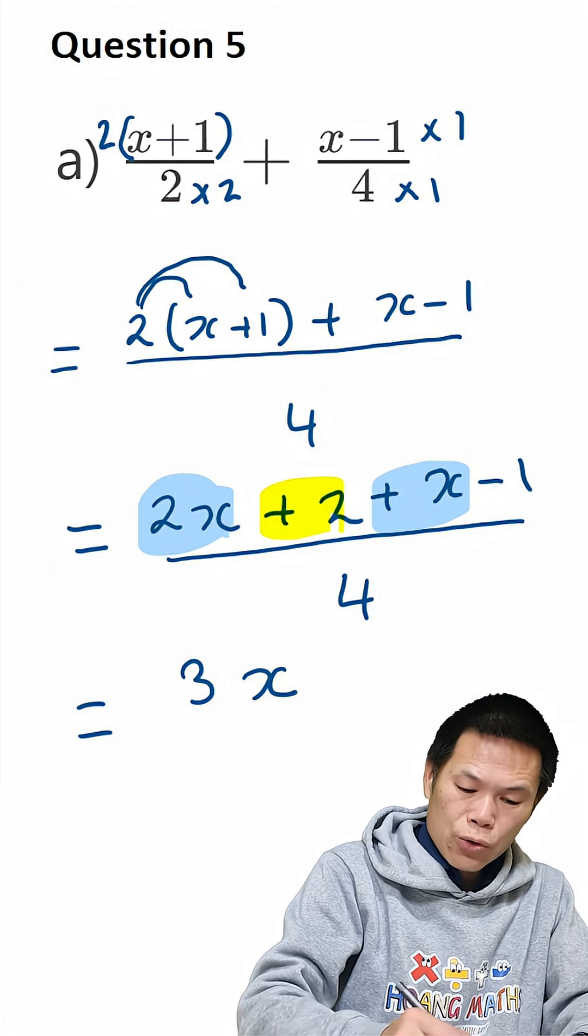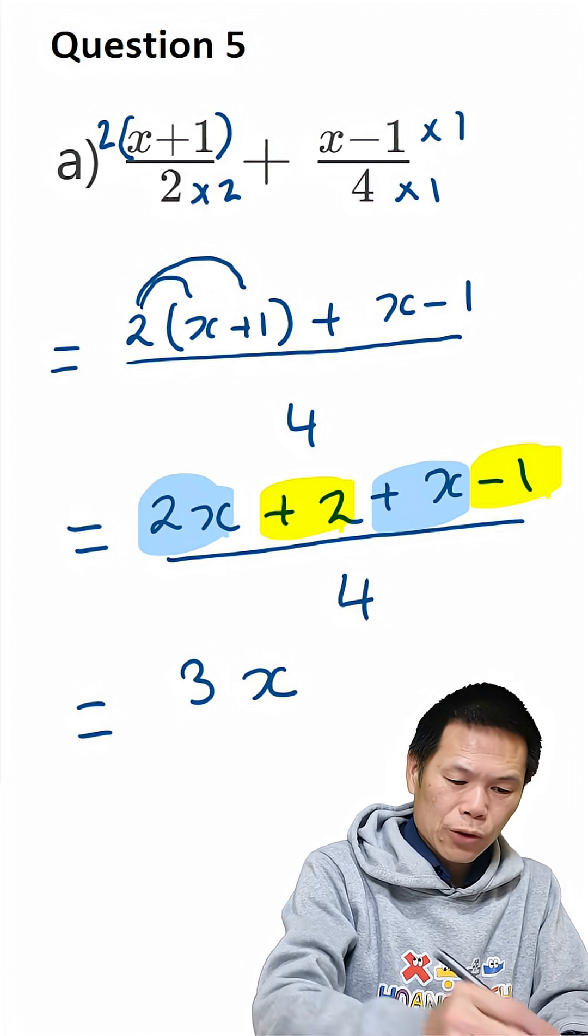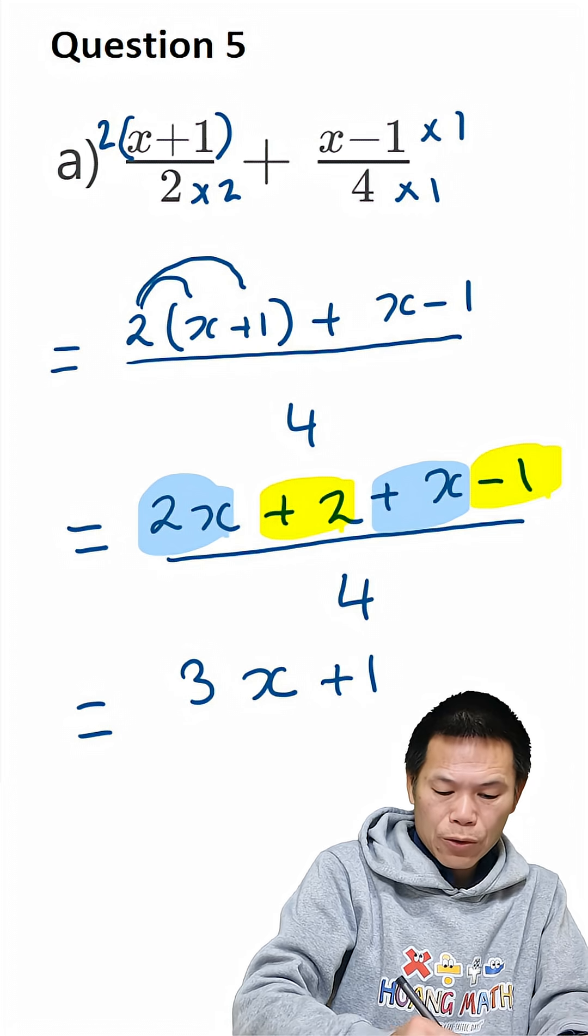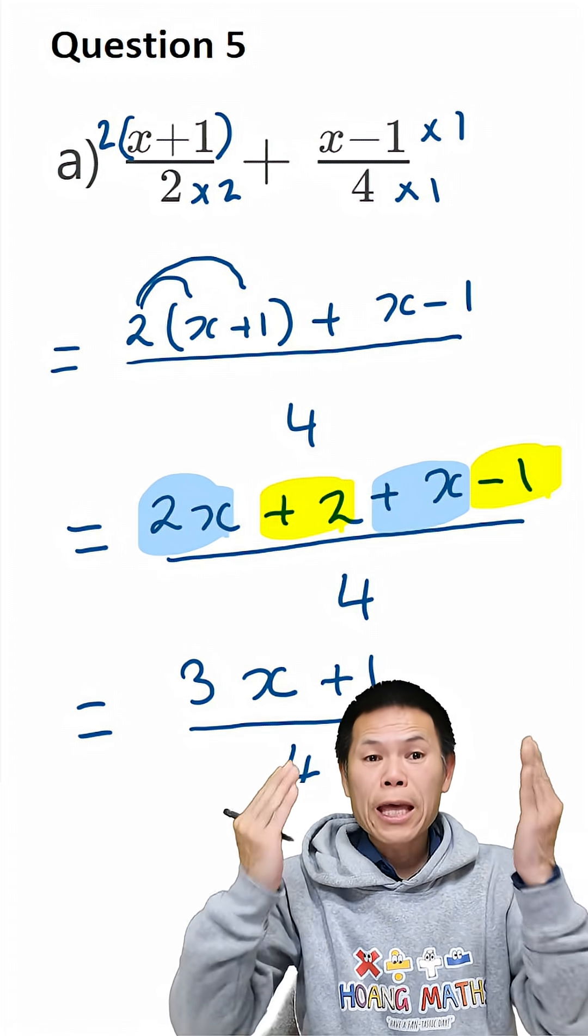And we have 2 minus 1. So 2 minus 1 is 1. So the answer is plus 1 over 4. So there you go.